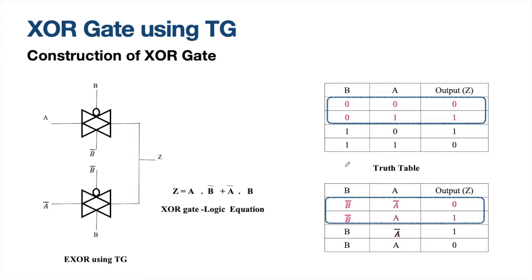In order to understand which variable to write for input and control signal, we do a small alteration in the table: instead of 0s in column B, we replace them with B_bar. Similarly, the 1s in column B are replaced with B. For column A, wherever we find 0, we replace those values with A_bar, and 1 is replaced with A.